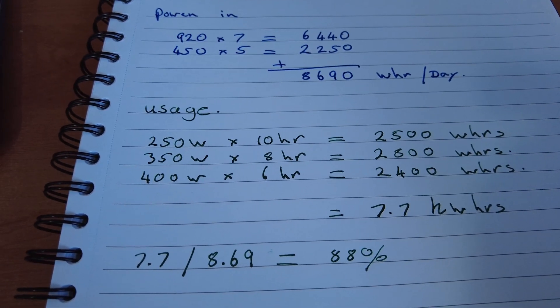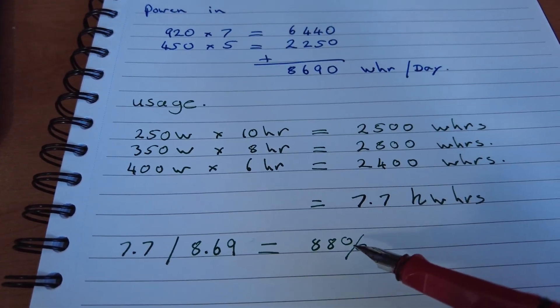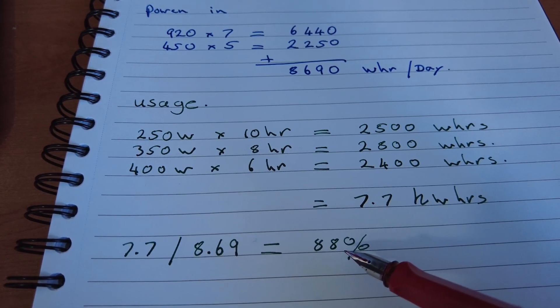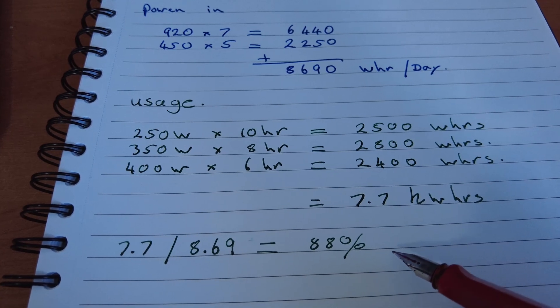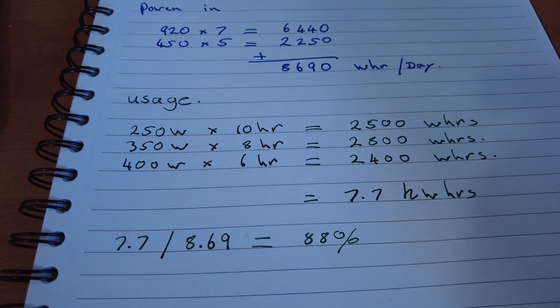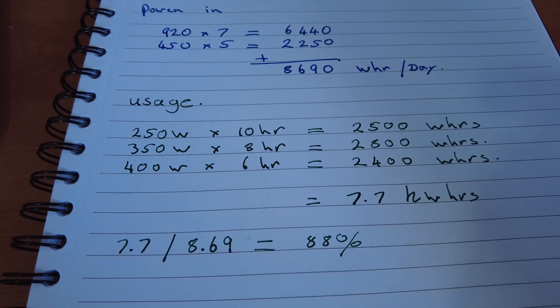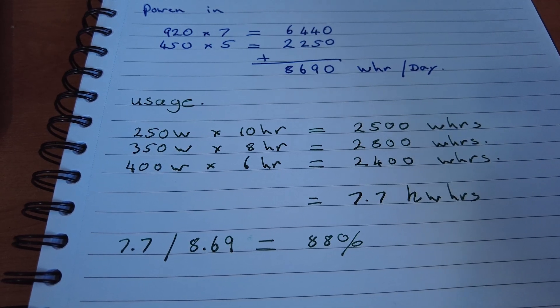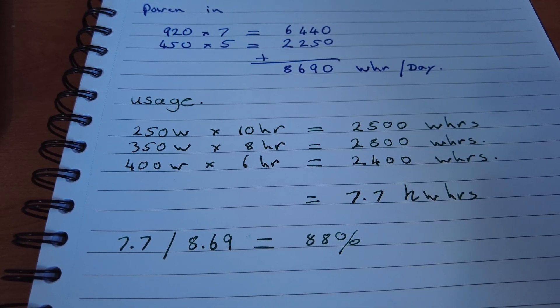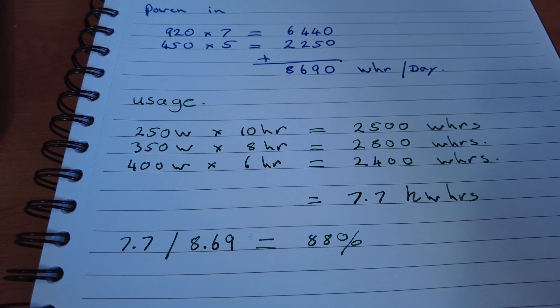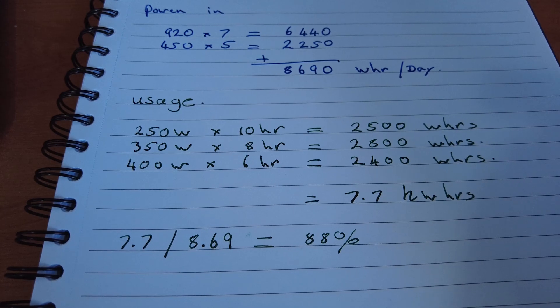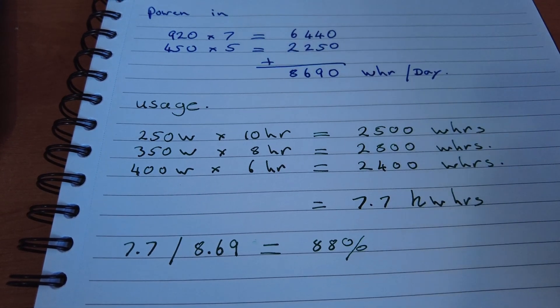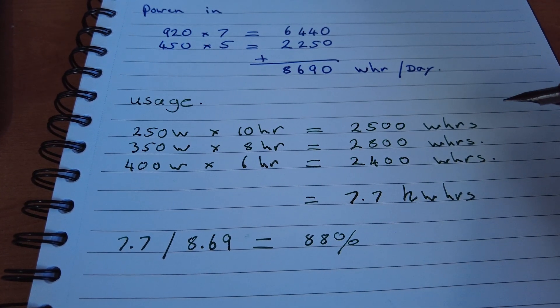So how does that shape up to my usage? I'm using roughly from my calculations about 88% of my solar generation capacity in a given day. So therefore I'm not maxing out the system. I do have a little bit of headroom there, and I'm able to not only support my usage throughout the day but replenish the usage I have taken out of the battery at night.